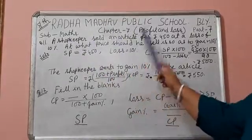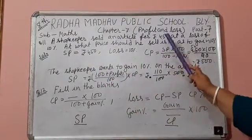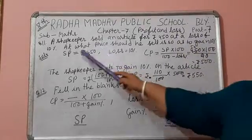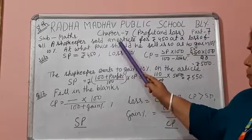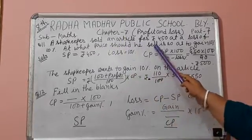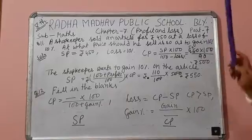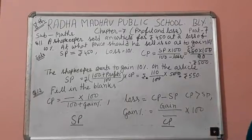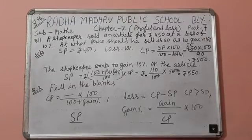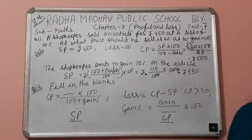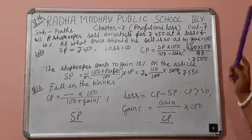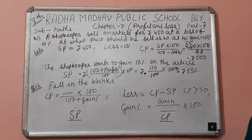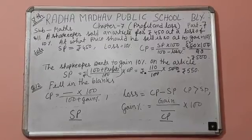A shopkeeper sold an article for Rs. 450 at a loss of 10%. At what price should he sell it so as to gain 10%? That means a shopkeeper, after selling an article at a 10% loss, wants to gain 10%. What will be his selling price? That means SP. Now, solution.